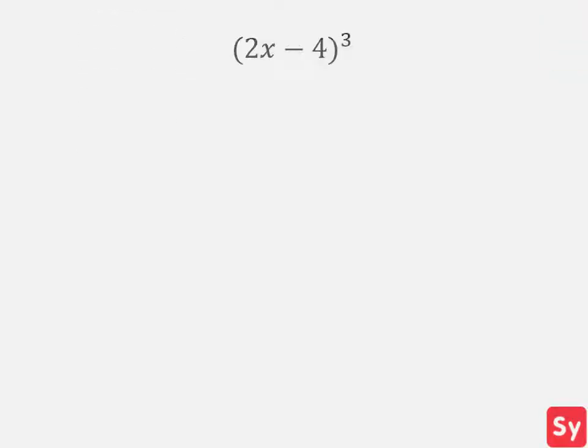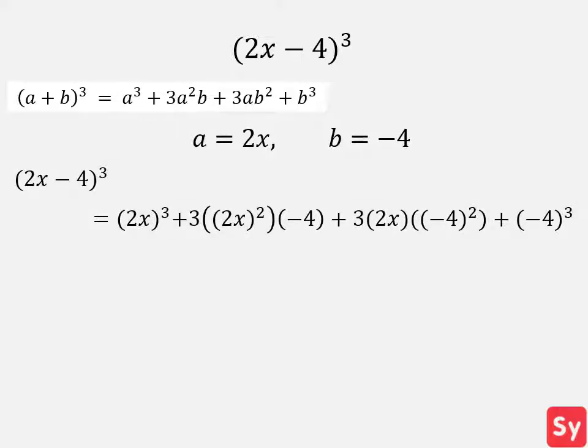Next example, we have 2x minus 4 cubed. We take a look at the perfect cube identity. We see that in this case a equals 2x and b equals negative 4. We plug these values into the identity. Then we simplify and get 2x minus 4 cubed equals 8x cubed minus 48x squared plus 96x minus 64, which is our answer.